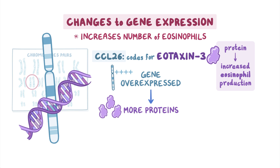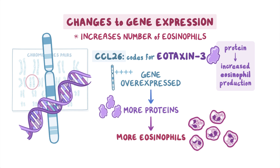meaning it is used to make more proteins than usual in people with eosinophilic esophagitis. When eotaxin-3 makes more proteins, those proteins trigger more eosinophils to be recruited to the esophagus, consequently resulting in the increased number of eosinophils present in people with EOE.